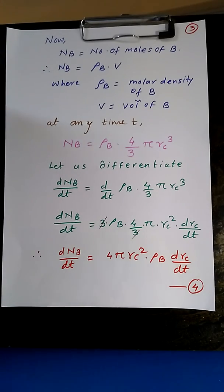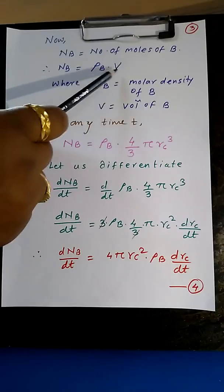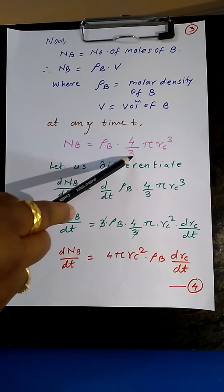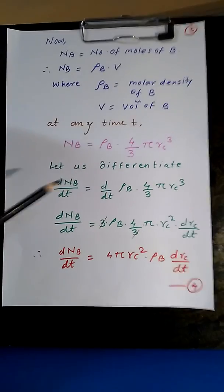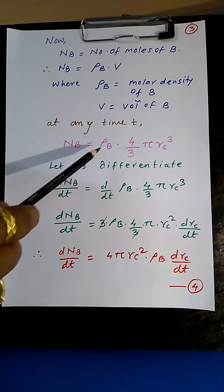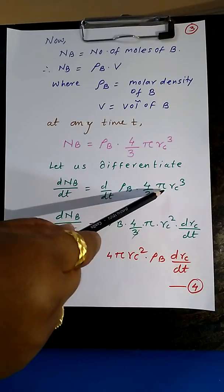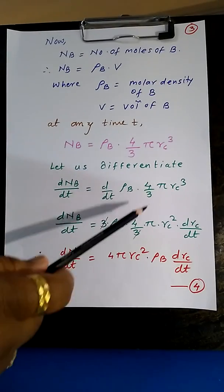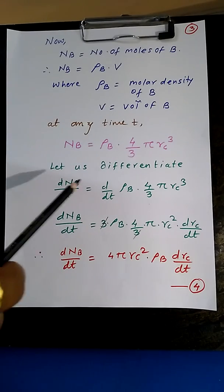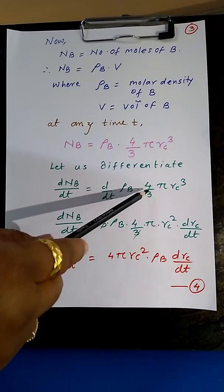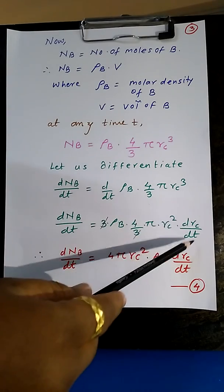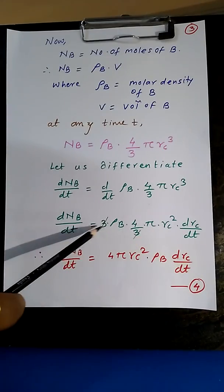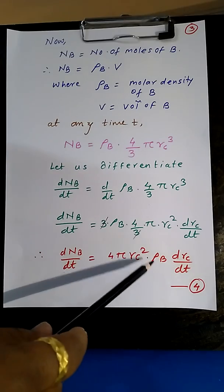Now NB is the number of moles of B at time t. So NB equals ρB into V, where ρB is the molar density of B and V is the volume at time t. So NB equals ρB into 4/3 π Rc³, where Rc corresponds to time t. Differentiating: dNB by dt equals d/dt of ρB × 4/3 π Rc³. Since ρB, 4/3, and π are constants, only Rc³ is differentiated, giving dNB by dt equals 4π Rc² ρB × dRc by dt.